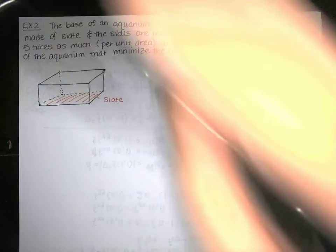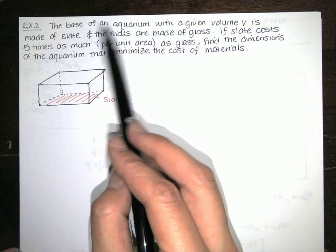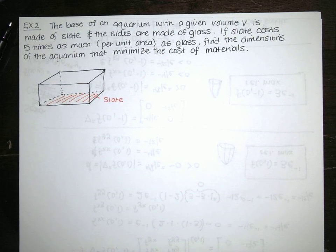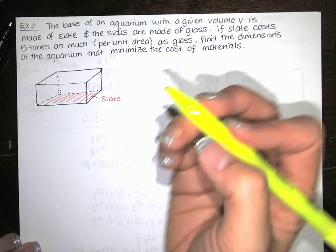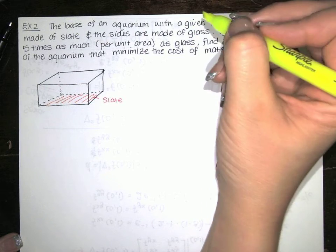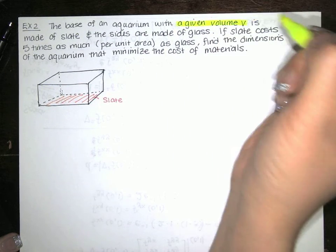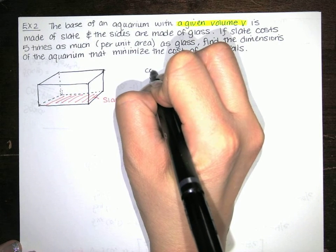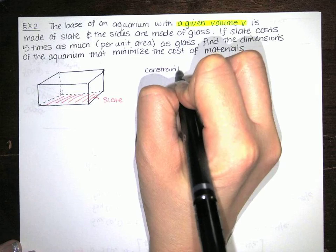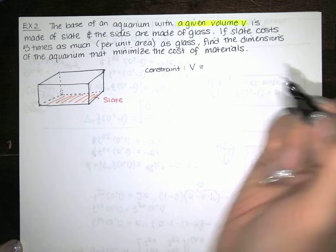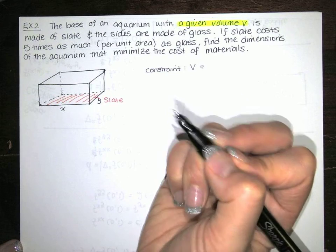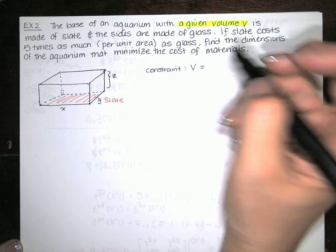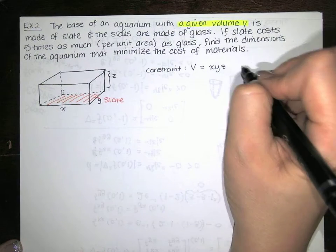We're told we have the base of an aquarium with a given volume. They didn't actually give us the volume, but they told us it was given, so it's some known constant. If I call the dimensions x, y, and z, the volume is x times y times z, and this is a given volume — a known constant.